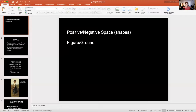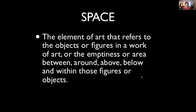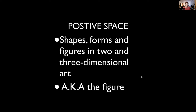All right. Positive and negative space — basically shapes and how they relate to each other. Figure and ground are terms that you hear often in painting and drawing, which also relate to positive and negative shapes. So we're going to learn that vocabulary a bit. Space is the element of art that refers to the objects or figures in a work of art, or the emptiness or area between, around, above, below, and within those figures or objects. Positive space is generally the shapes, forms, and figures in two-dimensional and three-dimensional art — also called the figure.